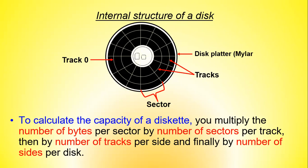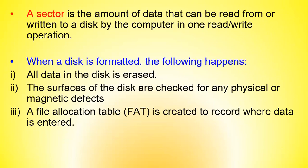Data is organized in terms of tracks, numbered from zero upwards from the outer side towards the center. Tracks are divided into sectors, and sectors are further divided into bits. To calculate the capacity of a disk, multiply the number of bytes per sector by the number of sectors per track, then by the number of tracks per side, and finally by the number of sides per disk. A sector is defined as the amount of data that can be read from or written to a disk in one read-write operation.